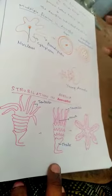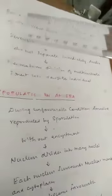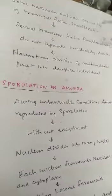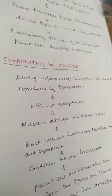Next is Strobilation in Obelia. In some metazoan animals, a special type of transverse fission is called Strobilation. Several transverse fissions occur simultaneously but do not separate immediately. Plasmotomy divisions of the multinucleate parent cell produce daughter cells. This process is called Strobilation.